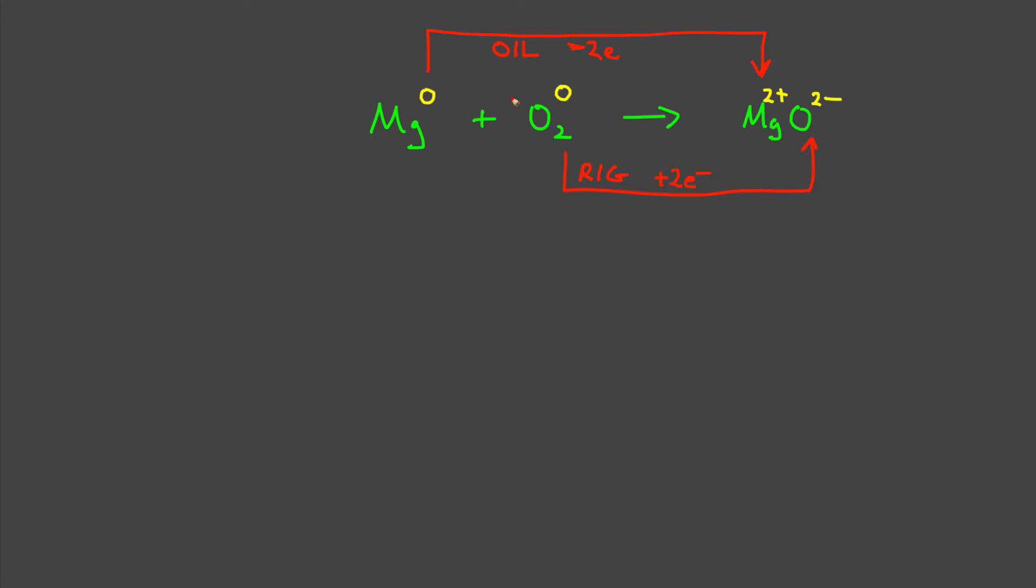The final question that we were going to consider is, how many electrons were transferred? One might quickly jump to the conclusion that the answer is two, because two are lost and two are gained. That matches up in the sense that the number of electrons lost will always be equal to the number of electrons gained. But this is still the wrong answer because we fundamentally have missed something that we should have done a very long time ago. We didn't balance the chemical equation. Notice you have two oxygens on the reactant side and only one on the product side.